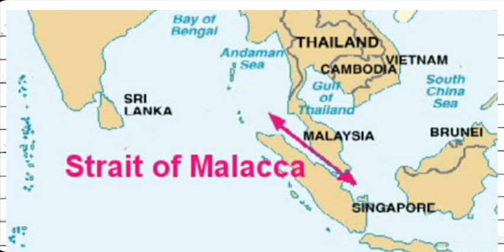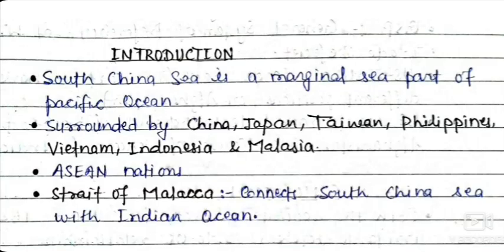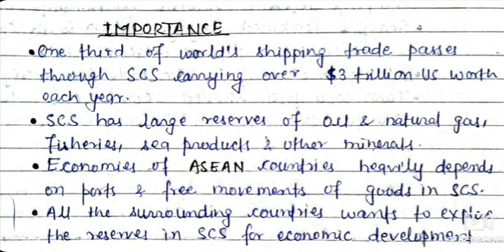The Strait of Malacca connects the South China Sea with the Indian Ocean, which is what makes it very important for trade. One-third of the world's shipping trade passes through the South China Sea, carrying over 3 trillion US dollars worth of goods each year — more than India's entire GDP — making this region extremely significant.